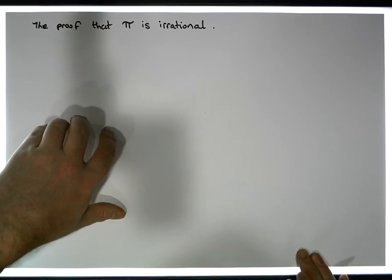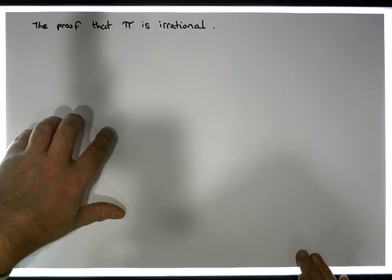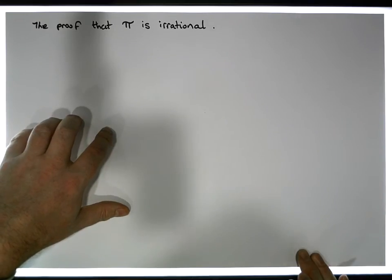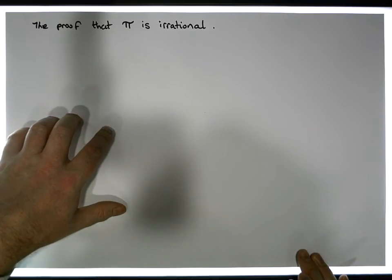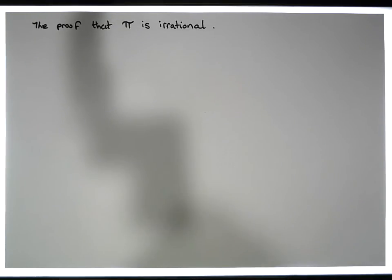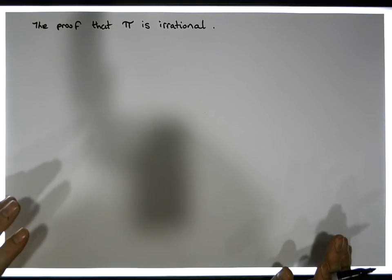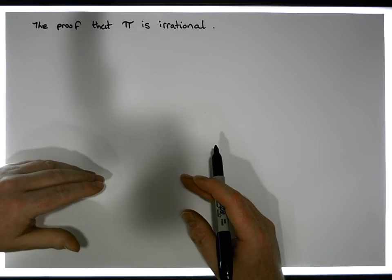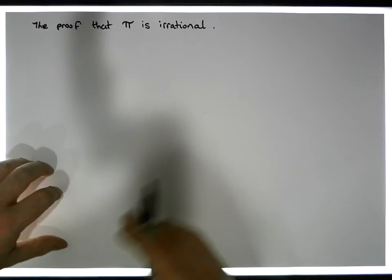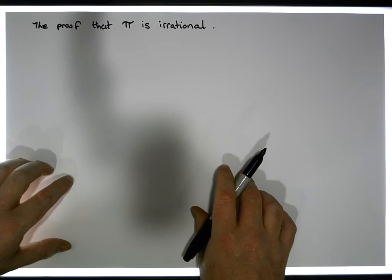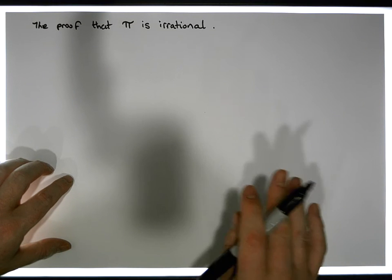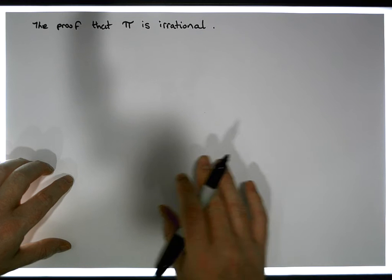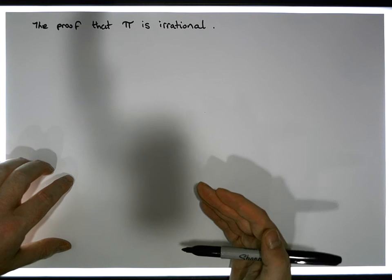It's a similar position to the proof provided by Michael Spivak in his classic calculus text. Albeit, Michael Spivak moves on to show that pi squared is in fact irrational. I'm not actually going to present the proof by Niven itself — it's actually quite small and very contained — but there are a lot of intermediate steps that are assumed with respect to the proof.